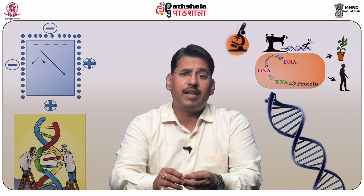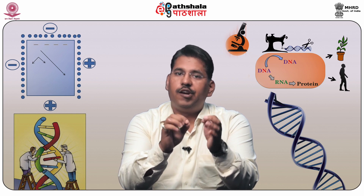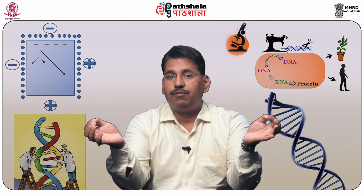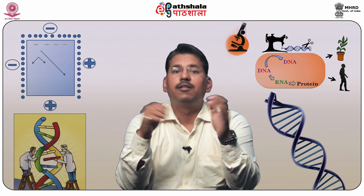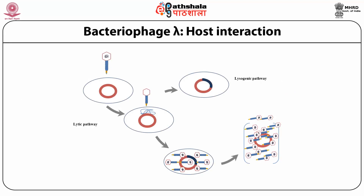The infection of bacteriophage lambda starts with the absorption of phage DNA by the bacterium. After entering into the host cell, the linear double-stranded DNA molecule gets circularized through the cos sites present at its ends, forming a circular DNA-like plasmid. A lambda bacteriophage virion has an icosahedral head with 55 nm diameter and a non-contractile tail of approximately 150 x 10 nm. The bacteriophage lambda adheres to the cell membrane of its host and injects its DNA into the bacterium.